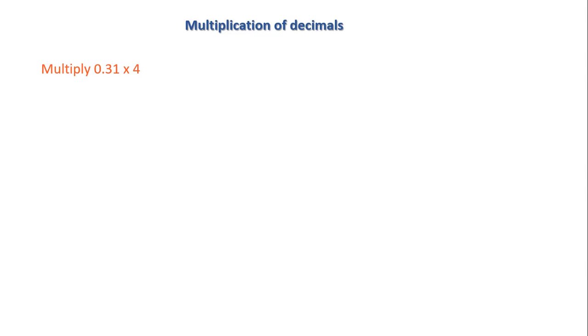Namaste students. In this video we are going to learn about multiplication of decimal numbers. Here is a problem: multiply 0.31 into 4 to find the product of our decimal numbers.